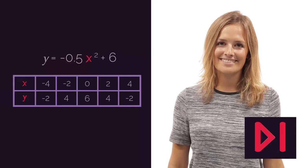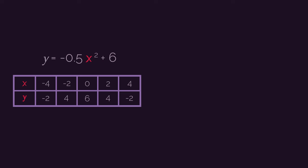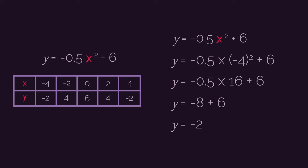Otherwise, keep watching. So let's run through the working for substituting in x equals negative 4. So we get y equals negative 0.5 multiplied by negative 4 squared plus 6, which gives us negative 0.5 multiplied by 16 plus 6. So negative 0.5 multiplied by 16 is negative 8. So then negative 8 plus 6 means y is negative 2. So when x is negative 4, y is negative 2. Just be careful with multiplying negatives. This is where people make their mistakes.